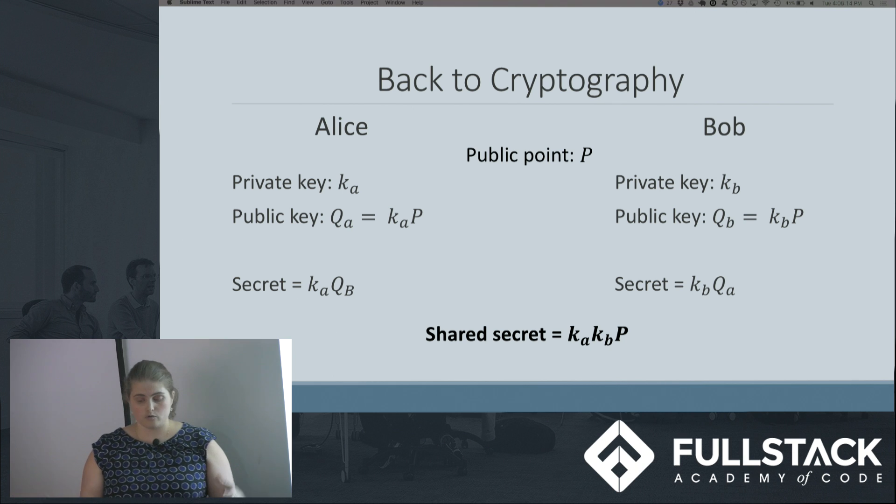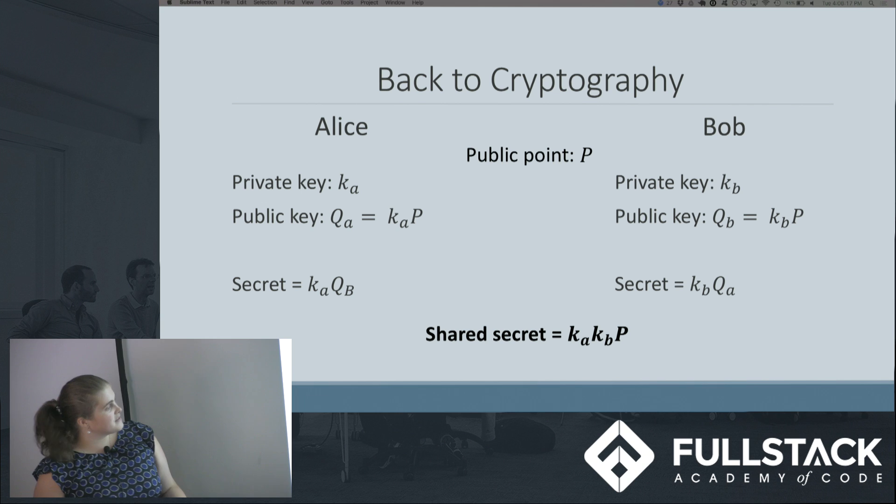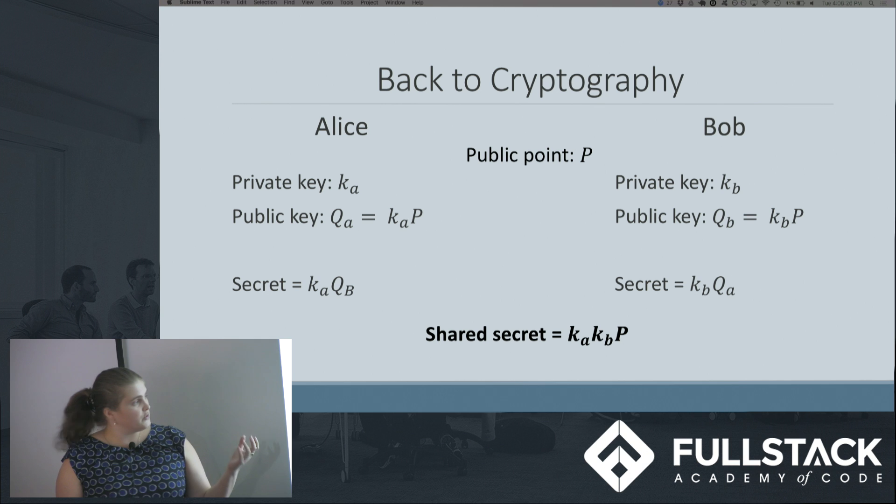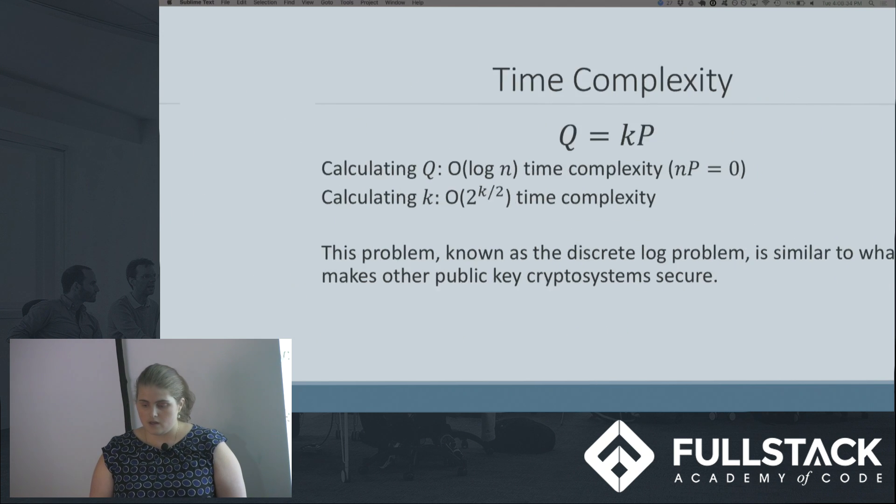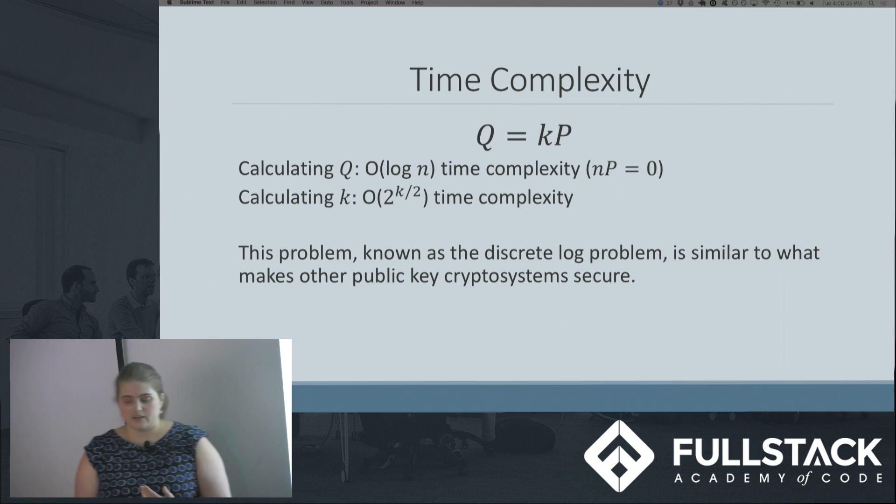They then exchange these public keys, and to generate their shared secret, they multiply the other's public key by their own private key. If you look, they actually have the same thing now—it's the product of the two private keys times our point P. The eavesdropper sees Q_A and Q_B, the two public keys, but those really don't help you find the two private keys. Calculating Q = kP is fairly quick, but finding k with only points P and Q is much harder. This is known as the discrete log problem and is the basis of most public key cryptography.